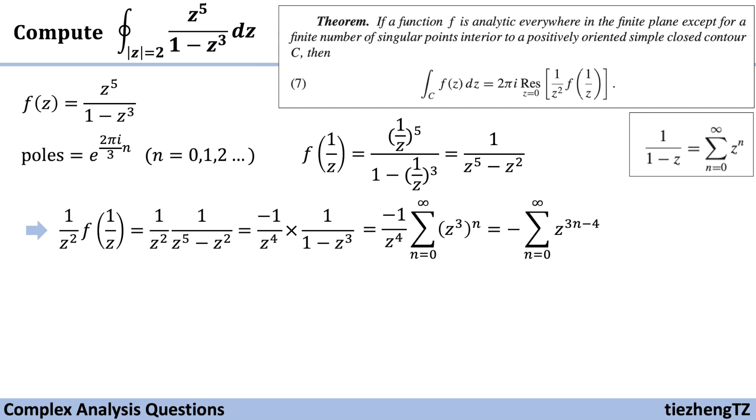And to look for the residue, we need to find the coefficient of the term 1/(z-z₀). And we know when n equals 1, we have the term 1/(z-z₀) when z₀ is approaching 0.